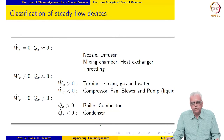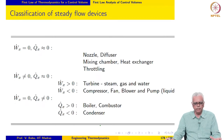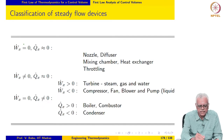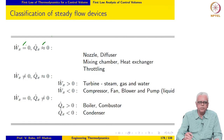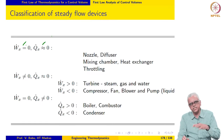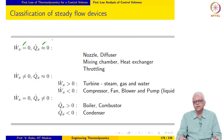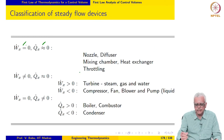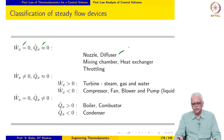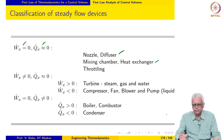Steady flow devices encountered in mechanical engineering may be broadly classified as follows. First, devices for which the work interaction is identically zero and the heat interaction may be approximately taken to be zero. In some cases heat interaction may not be zero, but generally it is very small and may be neglected. Devices that fall into this category include nozzles, diffusers, mixing chambers, heat exchangers, and throttling devices.